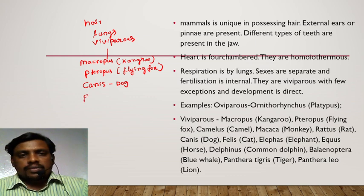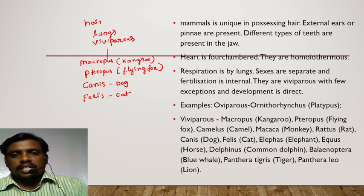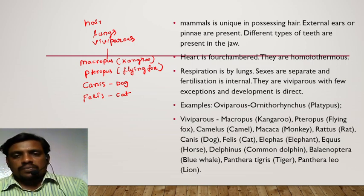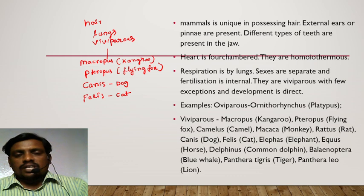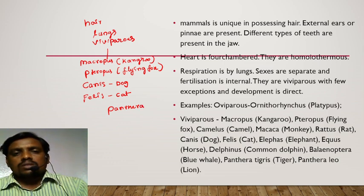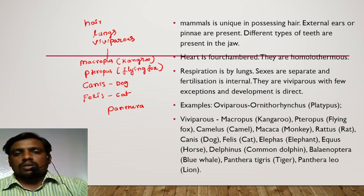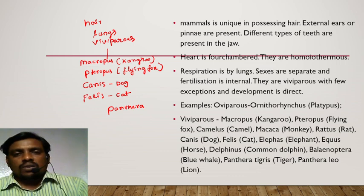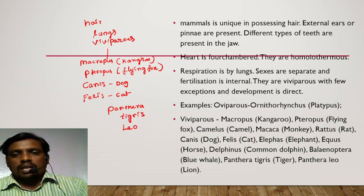Felis catus, commonly called cat. Elephas — elephant. Equus — horse. Delphinus — common dolphin. Balaenoptera musculus — blue whale, which is an aquatic mammal and the largest animal on the earth. Panthera tigris — tiger. Panthera leo — lion, etc.